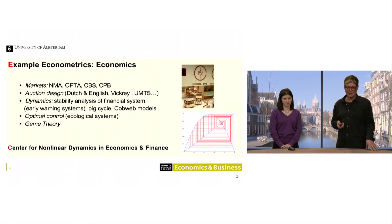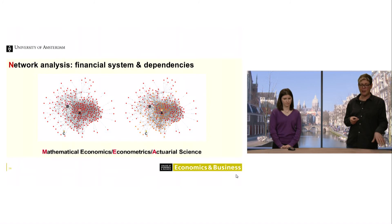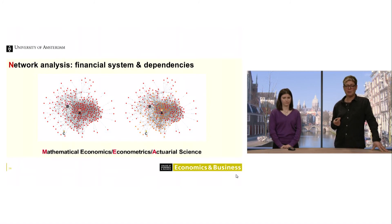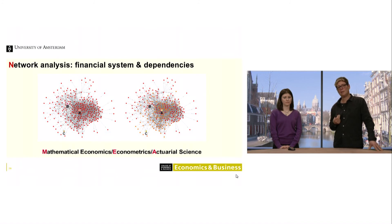Our research shows that even very simple structures may give rise to erratic patterns — the economic reality might be very simple but you might not see it through the data. This is one topic you may specialize in, but only in the third year. Where everything comes together — mathematical economics, econometrics, and actuarial science — is network analysis. In this picture, every dot is a bank, and a line is drawn between two banks if they have a related financial position.